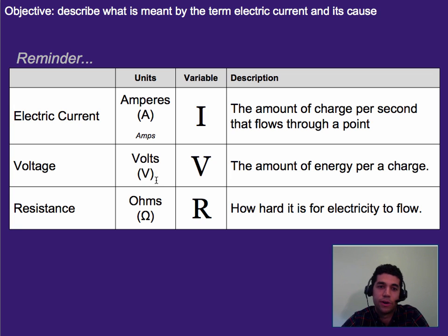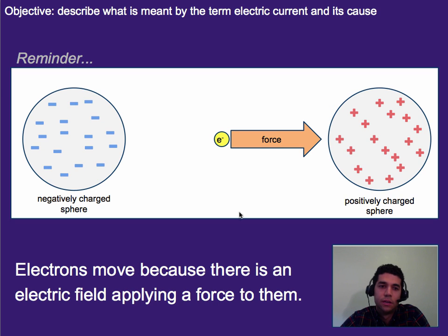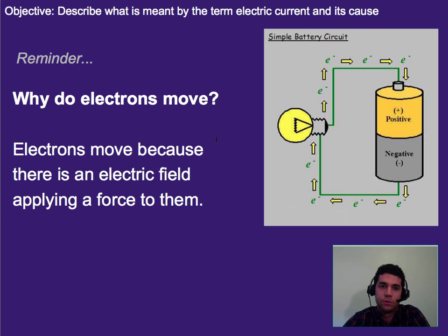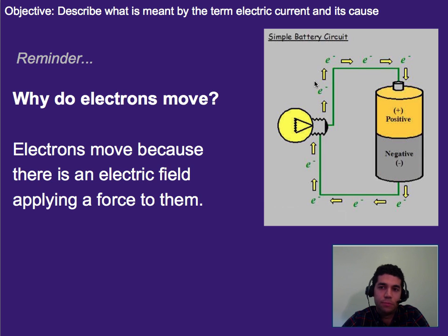Resistance, which we briefly mentioned, is measured in ohms, which is this little horseshoe or omega symbol. And it's how hard it is for electricity to flow — hence the term resistance. We briefly discussed that electrons move because there's an electric field. So here, an electron would be forced towards this positively charged sphere because it produces an electric field that applies a force to the electron. So all of that brought us this idea that batteries or other power sources provide electric fields that repel electrons out of the negative side, through the light bulb, and then into the positive side, and that's why the electrons move.